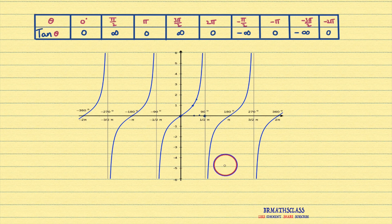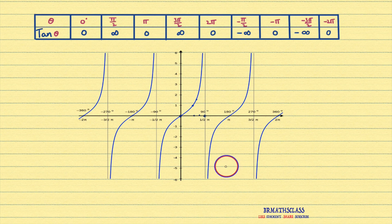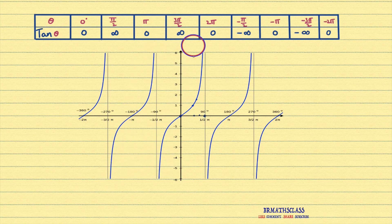So finally, what we learned in this class: we learned domain of tan theta — all real numbers except odd multiple of pi by 2. Range of tan theta is all real numbers — tan theta gives all the real values. And the graph looks like this.